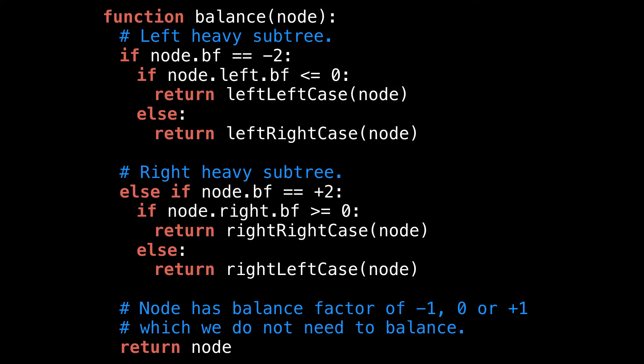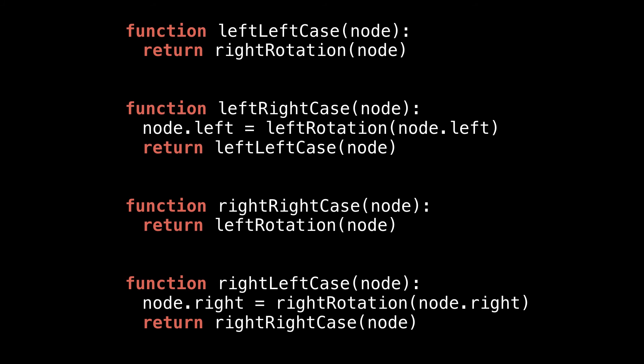If the balance factor is not plus two or minus two, then we know that the balance factor is going to be either plus one, zero, or minus one. And notice that all we do here are calls to the left rotation and right rotation methods that we saw in the last video. Also notice that the left-right and right-left cases call the left-left and right-right case methods respectively, since they reduce to those cases after a first rotation.